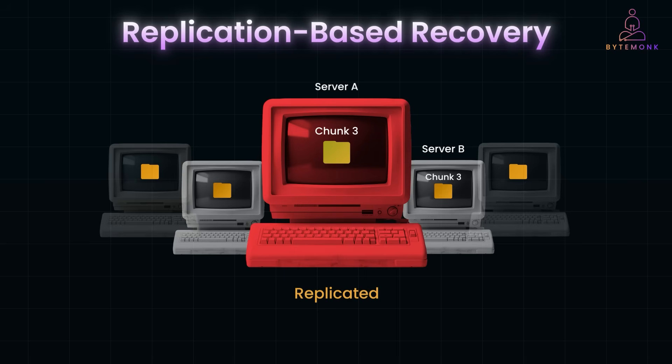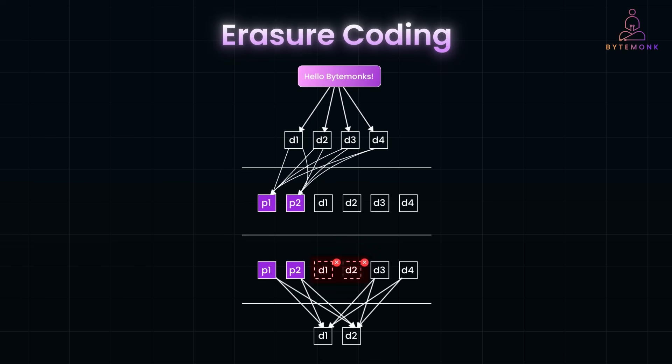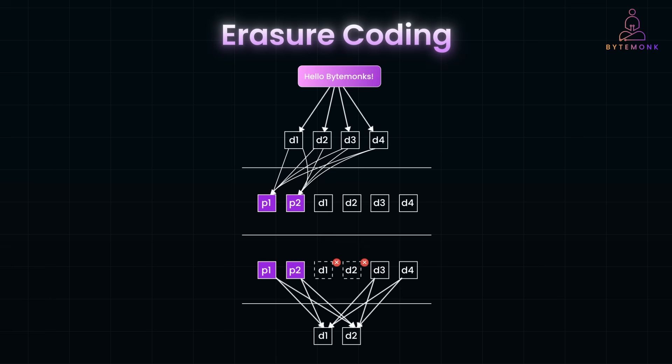If the system uses erasure coding instead of full replication, it reconstructs the missing chunk using the remaining data and parity chunks. For example, in a 4,2 erasure coding scheme — that is 4 data chunks and 2 parity chunks — if one or two servers fail, the system rebuilds the lost chunk using the parity chunks and serves the reconstructed file to the user. I highly encourage you to check my video on erasure coding.